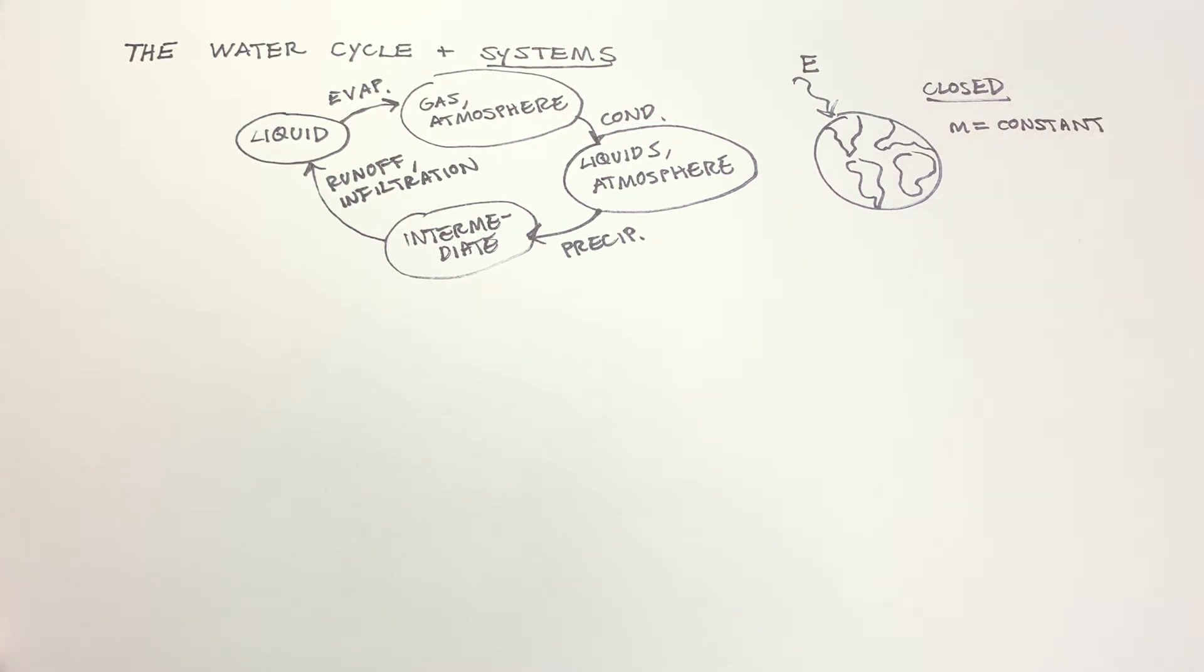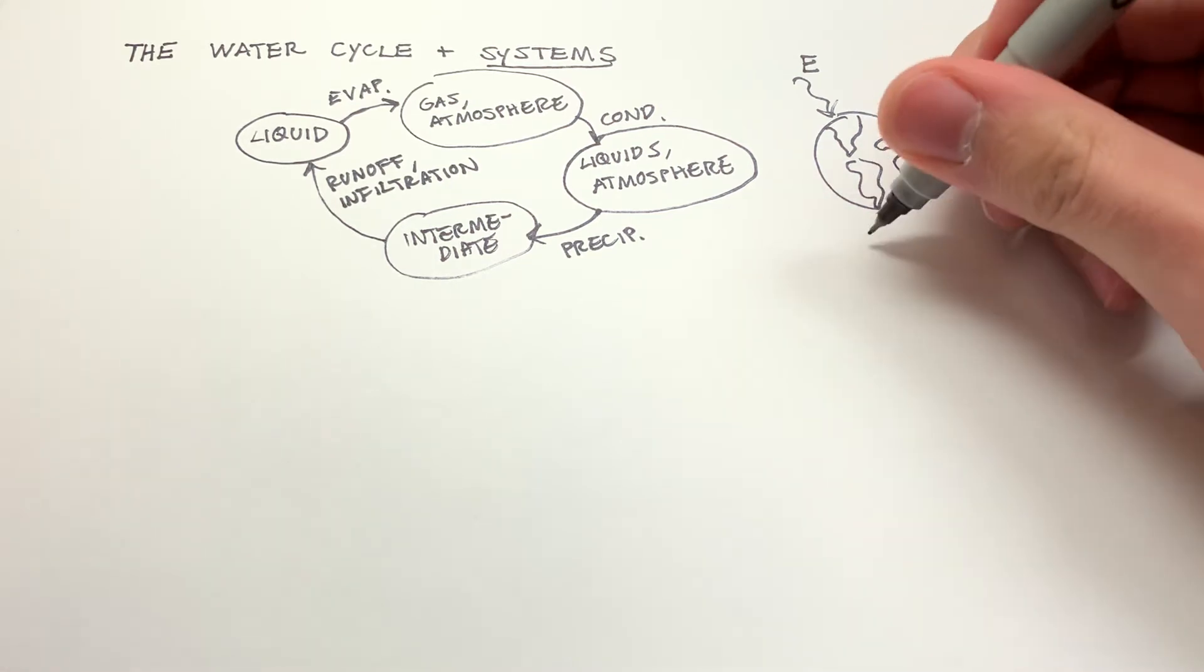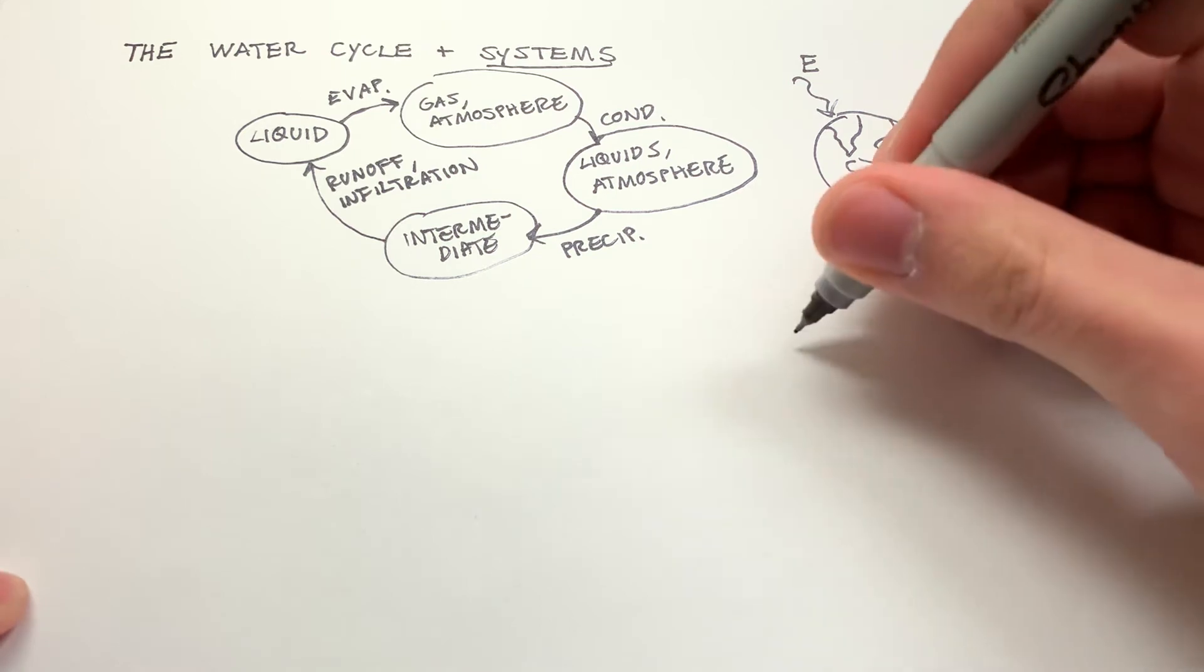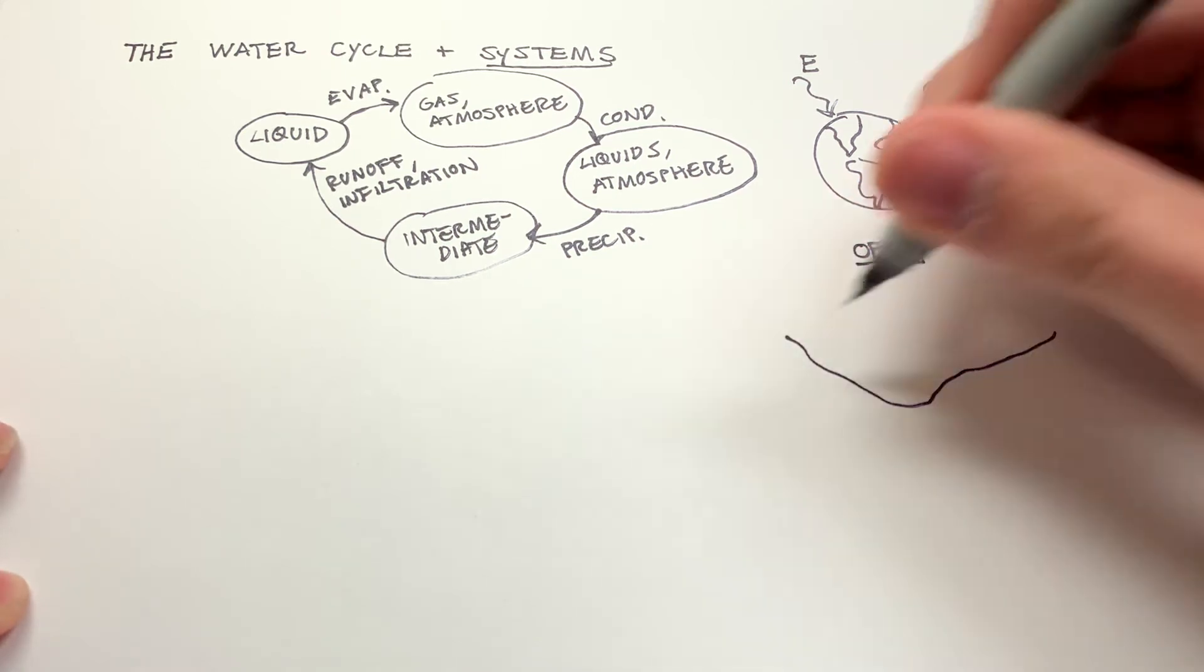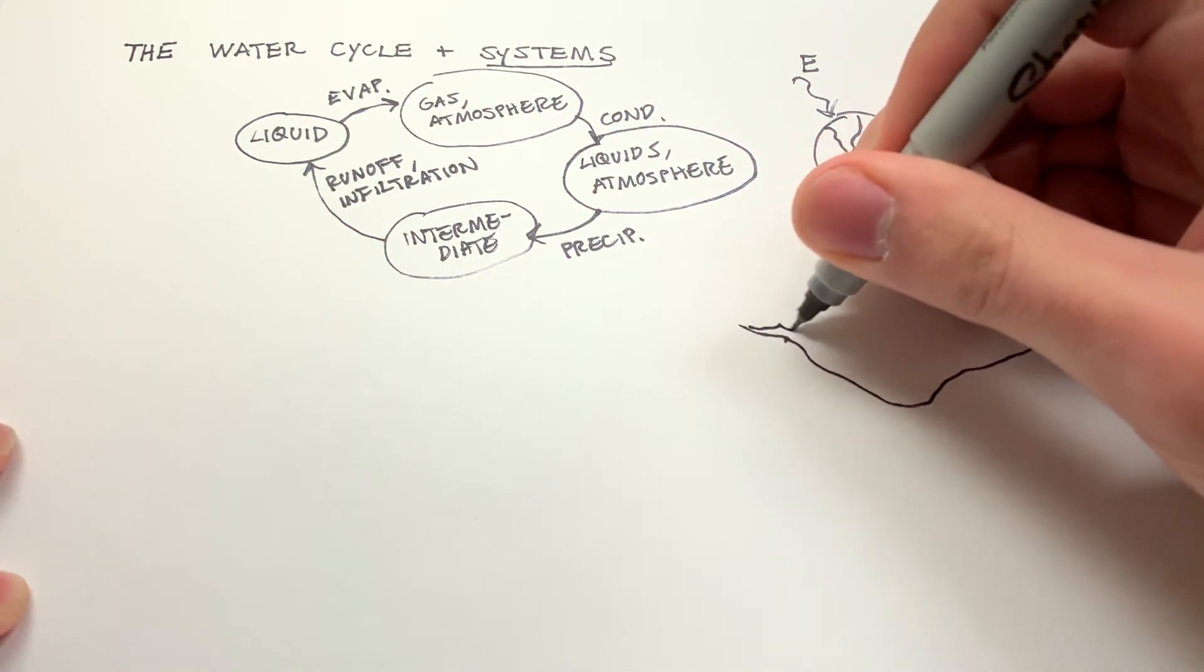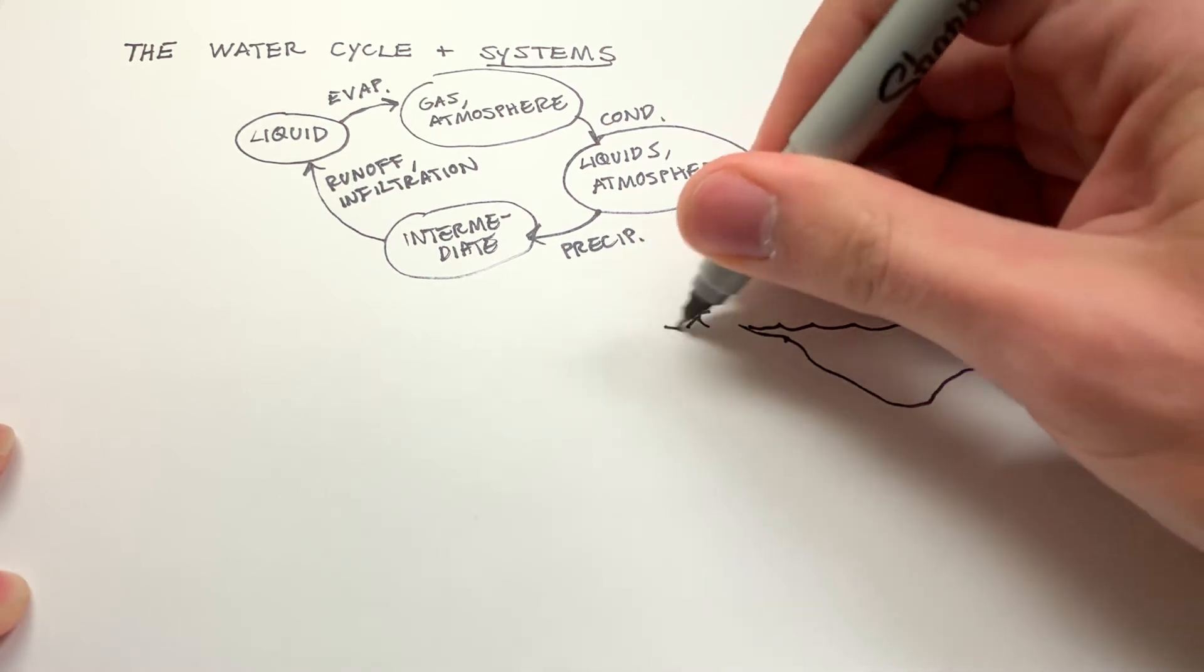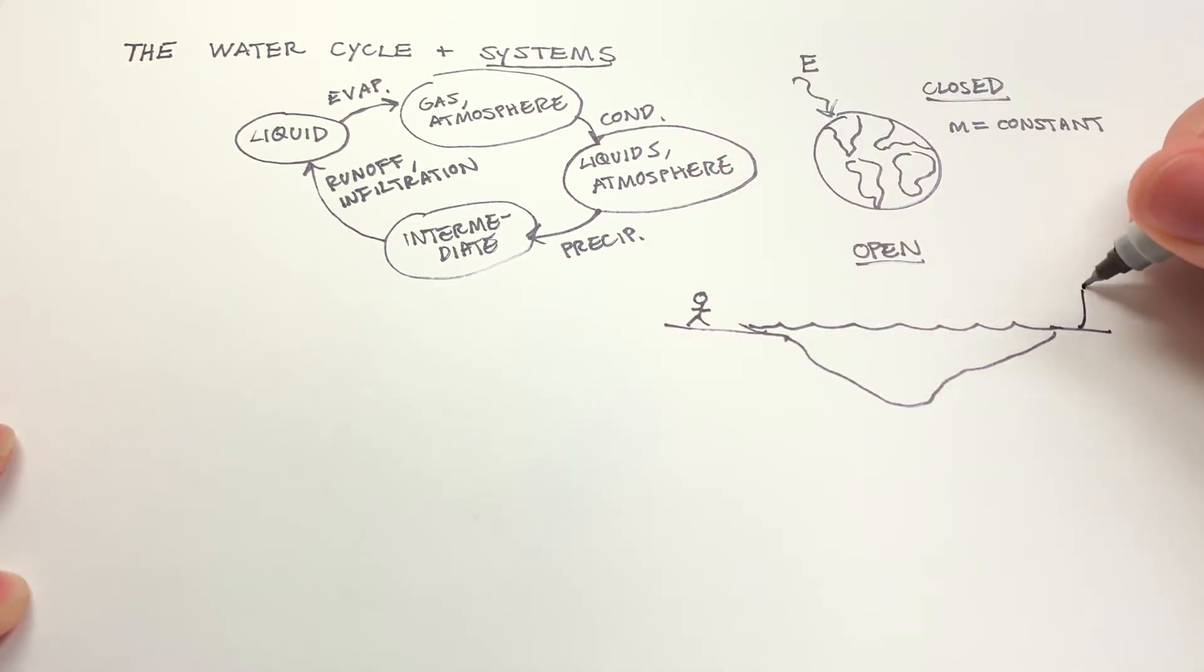So by contrast, an open system would be one where mass does change, where there are inflows and outflows of mass that are considerable. An open system would be many subsets of the earth. Let's take, for example, a lake. Got some water in there, maybe some people having some fun on the shore. Maybe there's a forest on the other side with some trees.